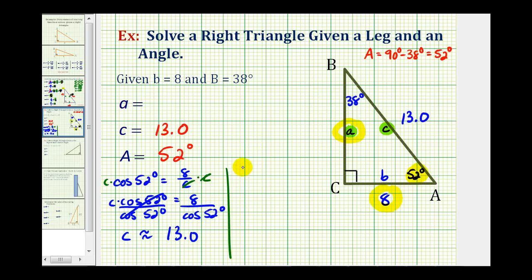Which means now we'll have the equation tangent 52 degrees must equal a divided by eight. Notice in this equation, we can solve for a in one step. We can multiply both sides of the equation by eight to determine the value of a.